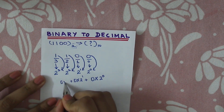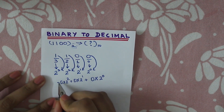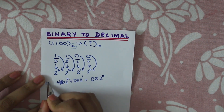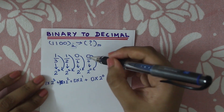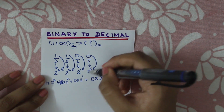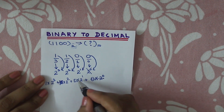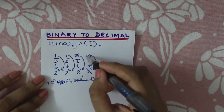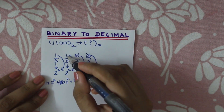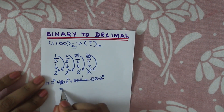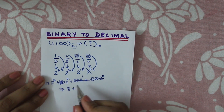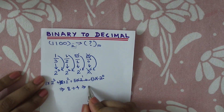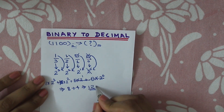So we have: 0 into 2 power 0, plus 0 into 2 power 1, plus 1 into 2 power 2, plus 1 into 2 power 3. We ignore the zero-bit positions and multiply only where the bit is 1. So: 2 power 2 is 4, plus 2 power 3 is 8, giving the decimal value of 12.